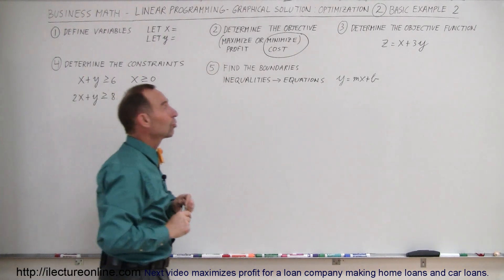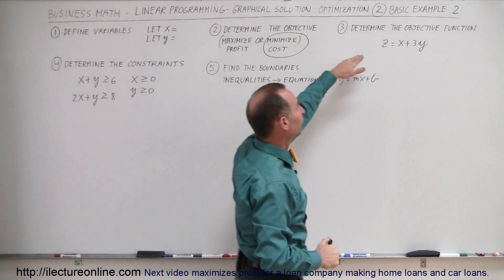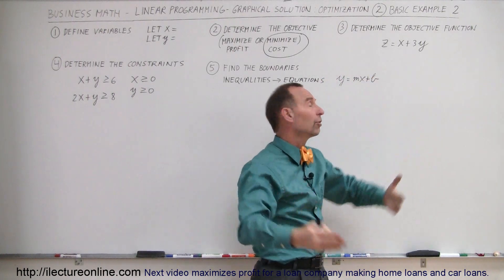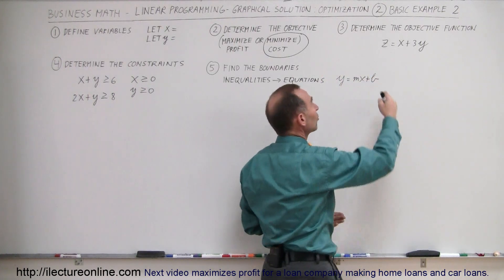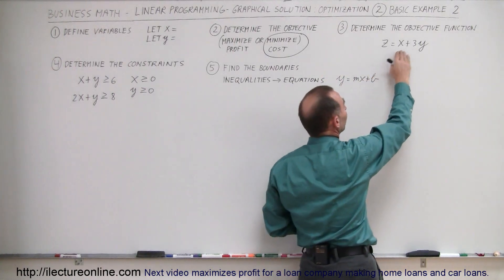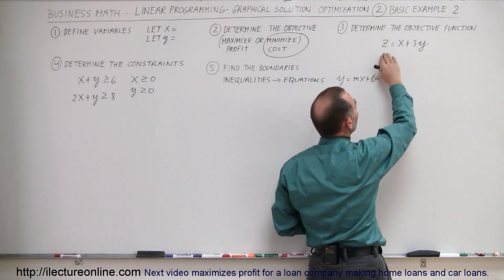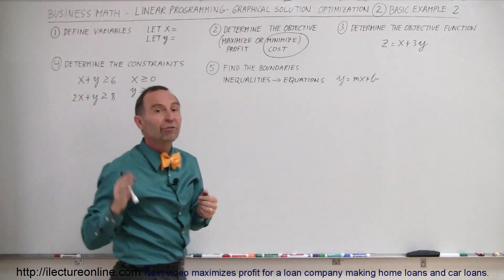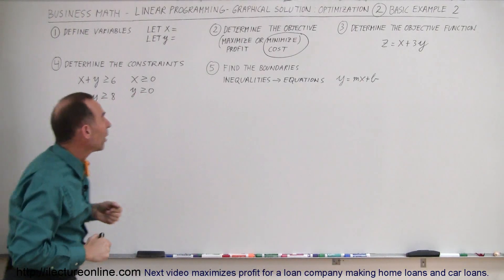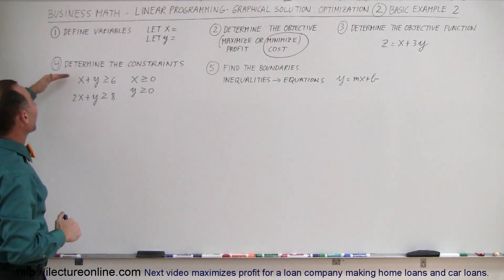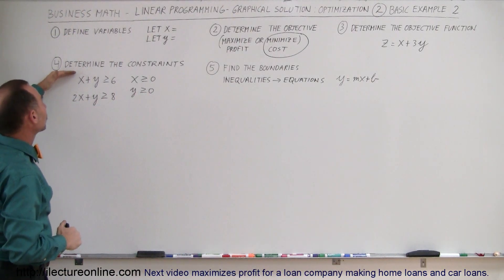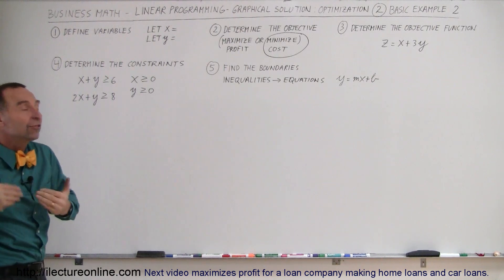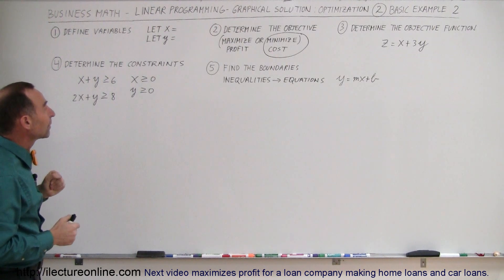The third thing is to determine the objective function. It's always in terms of the variables x and y. So z equals x plus 3y — that's our objective. Fourth, you want to determine the constraints. In this case, again, they're given to us.